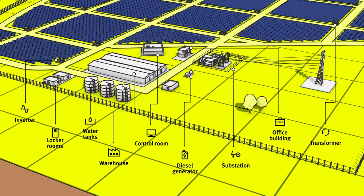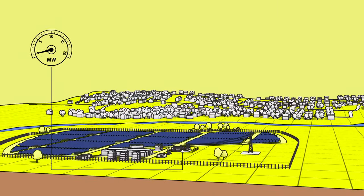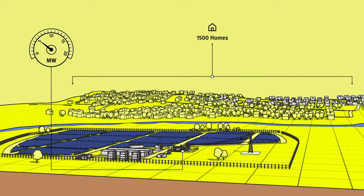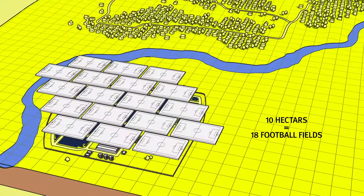Even a small farm with a capacity of 5 megawatts, which is enough to power about 1,500 homes, will need 10 hectares of land. That's about the size of 18 football fields.